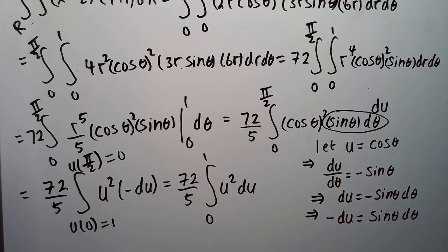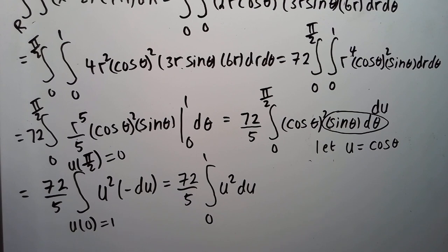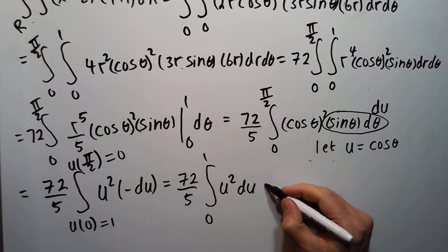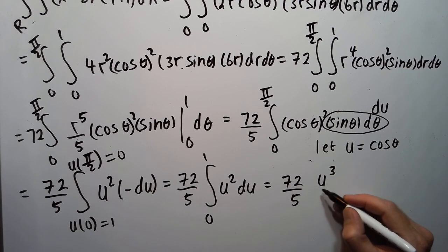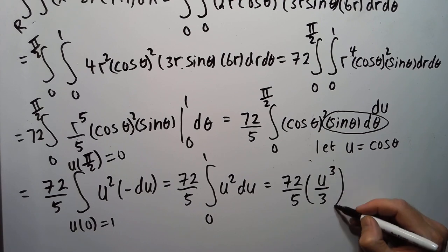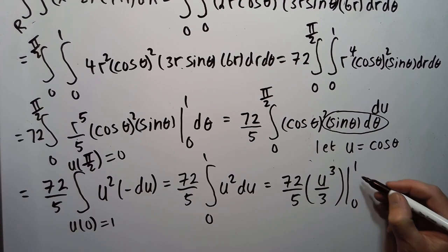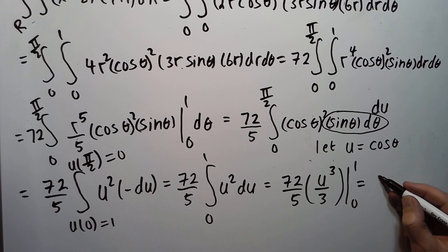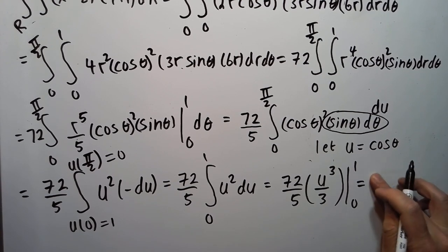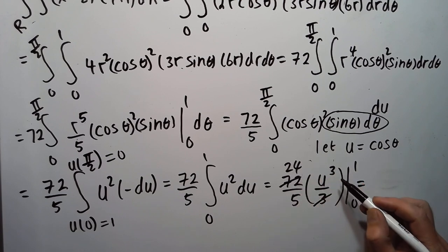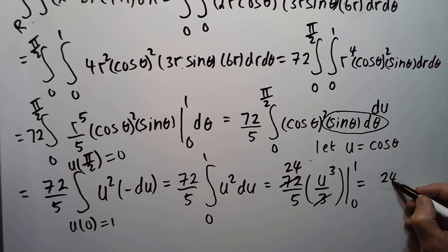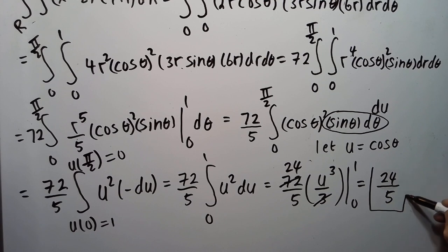Integrating: u³/3 evaluated from 0 to 1 gives 1/3. So the result is 72/5 · 1/3 = 24/5. This matches the answer we got in In-Class 8, so we're done.